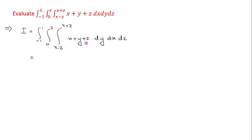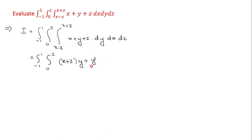With respect to y, x and z are treated as constants. So integrating first with respect to y, with limits minus 1 to plus 1 and 0 to z, x and z are both constants. The result is (x + z) times [y + y²/2] evaluated between y = x minus z² and y = x plus z, then dx dz.